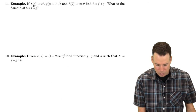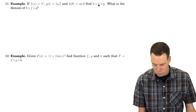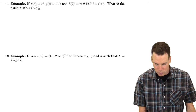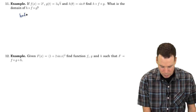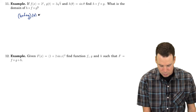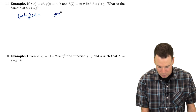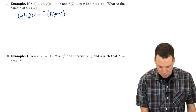Let's look at another example where we compose three functions f, g, and h. We want to find h composed with f composed with g, and then also work out the domain. For h composed with f composed with g of x, we do g first, take the result and plug it into f, take that result, and plug it into h.